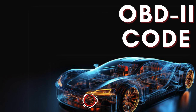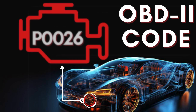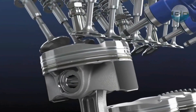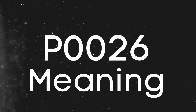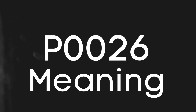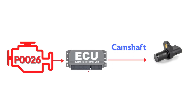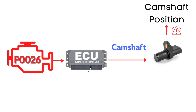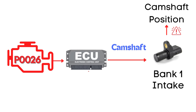Hey there! In this video, we're diving into everything you need to know about OBD-II trouble code P0026. First, let's understand what the P0026 code is. The P0026 code is triggered when the ECM detects that the actual camshaft position doesn't match the desired camshaft position. Specifically, this code points to an issue with the camshaft position actuator circuit for bank 1, referring to the intake camshaft.